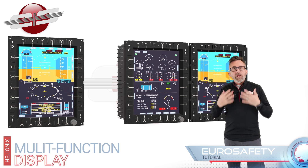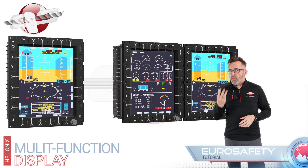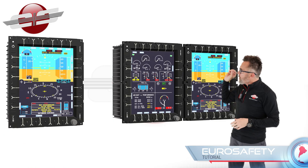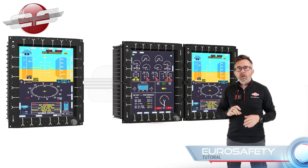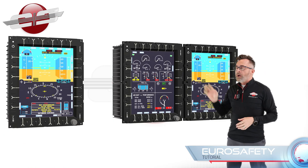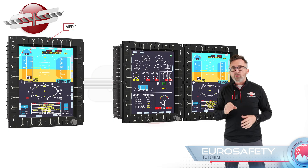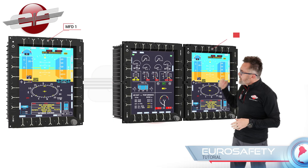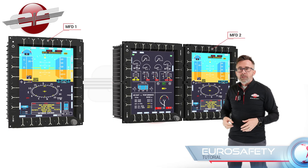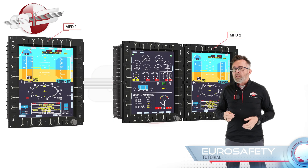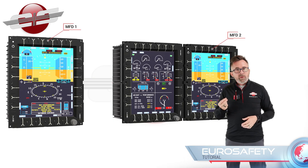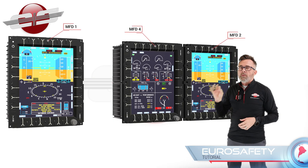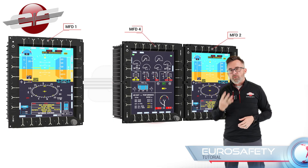The H-145 is equipped with three Helionics multifunction displays, or MFDs. The screen on your left, or your co-pilot screen, is MFD number one. The screen on your right, or your pilot screen, is MFD number two. And the middle screen is MFD number four.